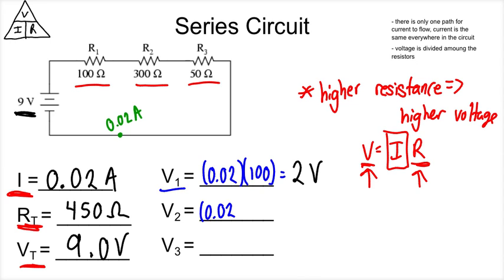This one is going to be the current, which is 0.02 amps, times 300, which gives us 6 volts. And the last one is 1 volt. So there's all our voltages.